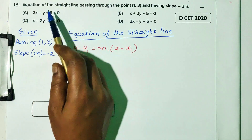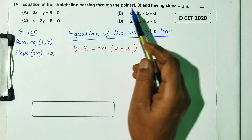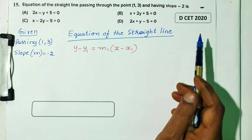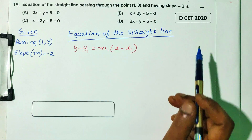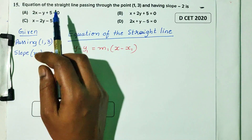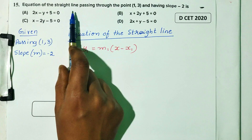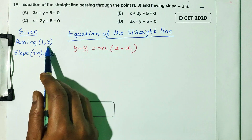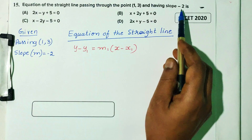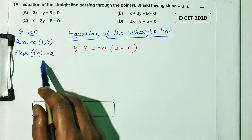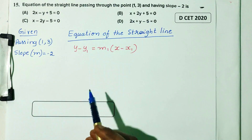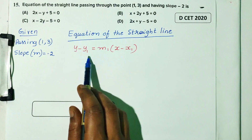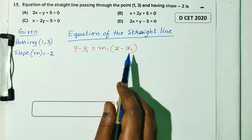Question number 15: the equation of the straight line passing through the point (1, 3) and having the slope minus 2. DCT equation. We use the equation of a straight line formula: y minus y1 equals m into x minus x1.